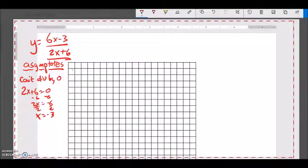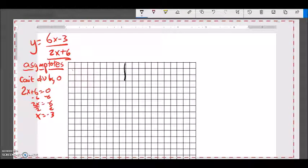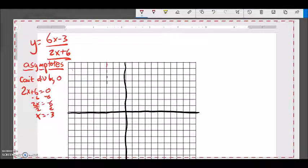So let me sketch that in. First off, I'm going to need my x and y axes. And x cannot equal negative 3. So 1, 2, 3. So that x equals negative 3 right along this dotted line right here.